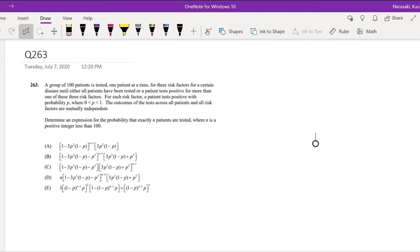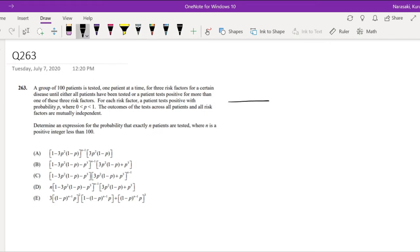A group of 100 patients is tested, one patient at a time, for three risk factors for a certain disease until either all patients have been tested or a patient is positive for more than one of these risk factors. So they stop the trial when patients test at least positive for two of the three factors, or if they test positive for all three risk factors. For each risk factor, the patient tests positive with probability P. The outcomes for the test across all patients and all risk factors are mutually independent. Determine the expression for the probability that exactly N patients are tested where N is a positive integer less than 100.